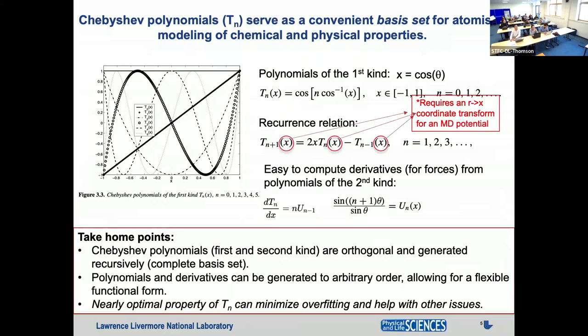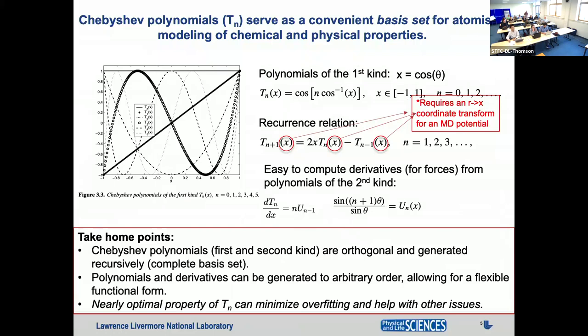One of the very nice things about Chebyshev polynomials is this recurrence relation. You can build up as many as you need by specifying what order you want and just building them up. The Chebyshev polynomials of the second kind come from the first kind: since the first kind is just a cosine function, we can also have a recursion relation in a second set of polynomials, which are related to the derivative of the first kind — you start with cosines, take the derivative, and get something that varies as a sine function instead.